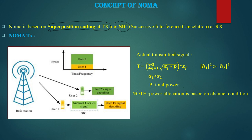In this diagram we have two users: user 1 and user 2. User 1 is a strong user because it is closer to the base station, and user 2 is a weak user because it is farther from the base station. User 1 has channel coefficient h1 and user 2 has channel coefficient h2. The magnitude |h1|² will be greater than |h2|² because user 1 is the strong user closer to the base station. We want to serve both users in the same time-frequency resource, so we assign different power to each user. User 2, being the weak user, gets higher power, and user 1 gets lower power. This power allocation is the main factor for implementing SIC.